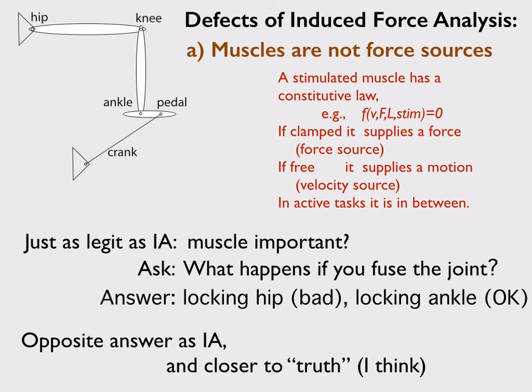If you want to ask whether a muscle is important, you can think: let's remove it. If you think of a muscle as a velocity source — the other extreme from a force source — removing the muscle is like fusing the joint. What's the importance of the hip muscle? Try fusing the ankle joint: if you fuse the ankle joint, you can pedal just fine, so the hip comes out as important, like it is in reality. Induced acceleration analysis says if you set the ankle torque to zero, the hip makes a positive or negative contribution depending on details. On the other hand, if you lock the hip and don't let it move — removing the hip muscle by setting its velocity to zero — you can't pedal at all. This other extreme view of the muscle as a velocity source gives the opposite and perhaps better answer. I'm not arguing a muscle should be thought of as a velocity source — I'm just saying the force source idealization is just as arbitrary.